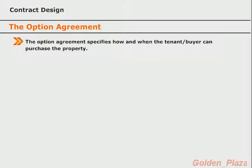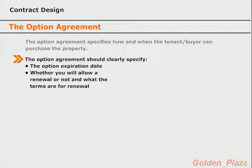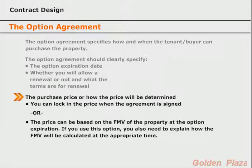Now let's move on to talk about the option agreement. The option agreement specifies how and when the tenant buyer can exercise their option and actually purchase the property. One of the main things it should clearly state is an expiration date — this signals the end of the lease option agreement, where if the option is not exercised or renewed, it becomes null and void. Aside from the expiration date, you should include whether or not you will allow the tenant buyer to renew their agreement if they decide not to buy at that time, making it very clear what the terms are for renewal or that renewing is not an option.